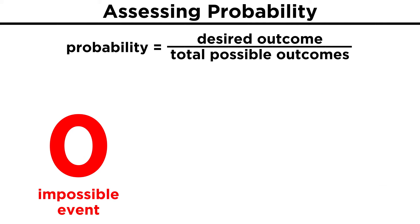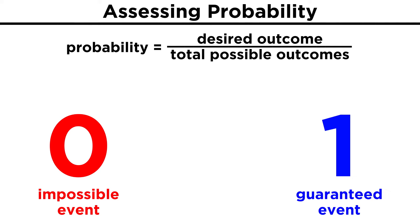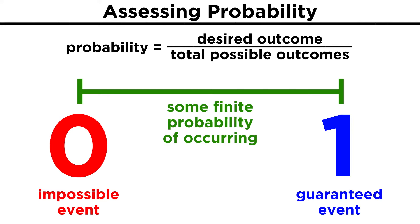If something absolutely won't happen, the probability is zero. If something absolutely will happen, the probability is one. Anything else must be some value between zero and one, so this is the interval that is allowed for probabilities.